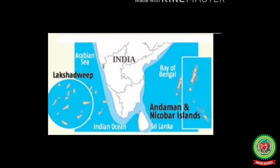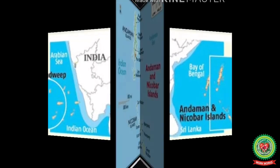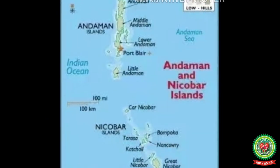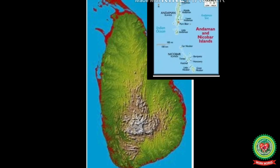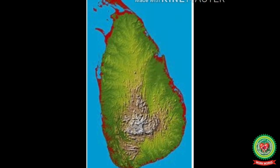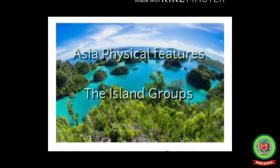Many small archipelagos are in the Indian Ocean. In the Arabian Sea there are the low coral islands of the Maldives and the Lakshadweep. In the Bay of Bengal there are the Andaman and Nicobar Islands. On the southern tip of peninsular India, the island of Sri Lanka is located.